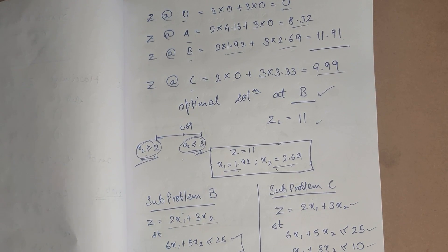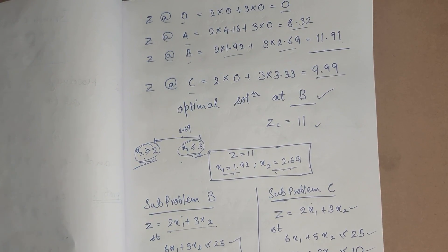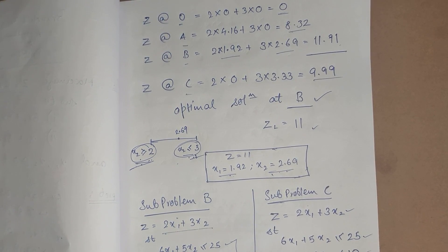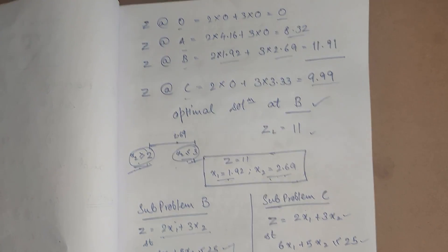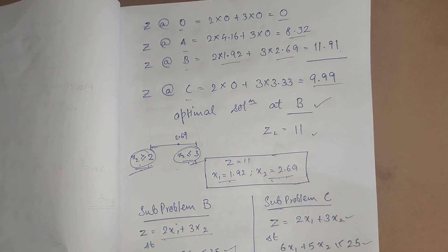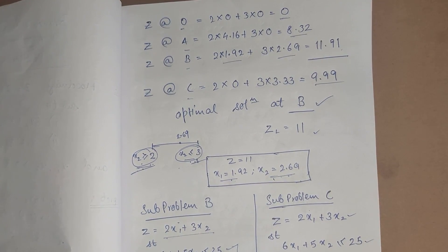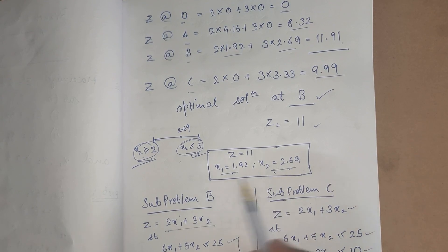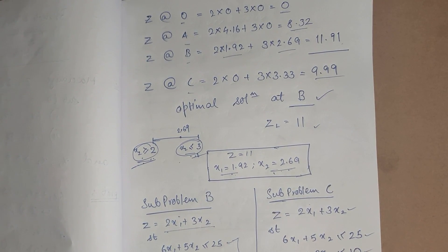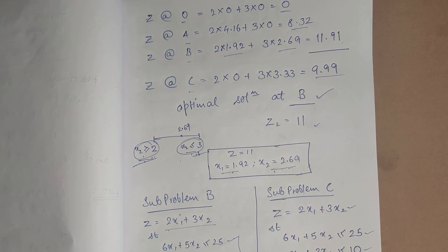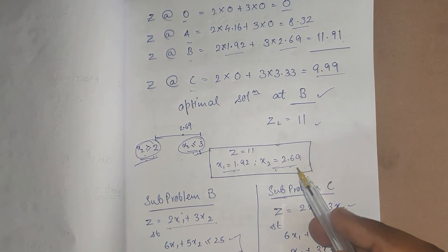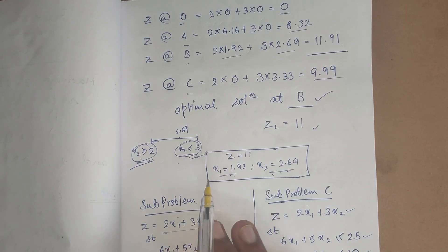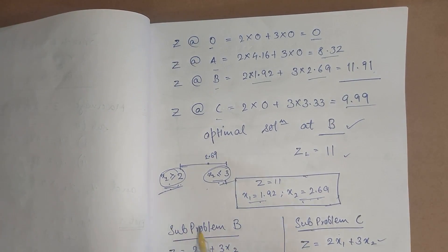In integer programming, we need whole numbers and do not consider decimals. To handle this, we use the branching and bounding technique. We can branch on either x1 or x2; here we will go with x2 = 2.69.